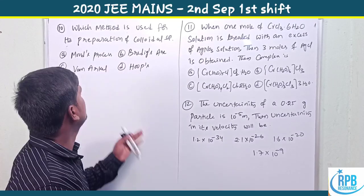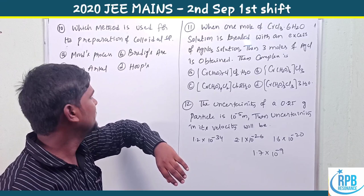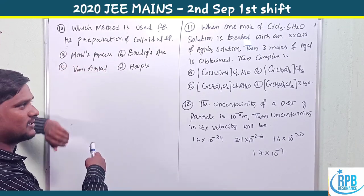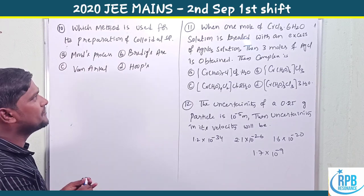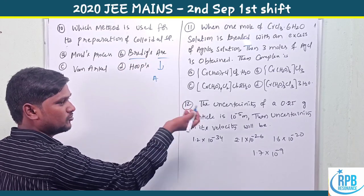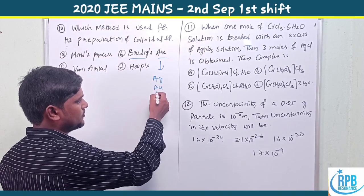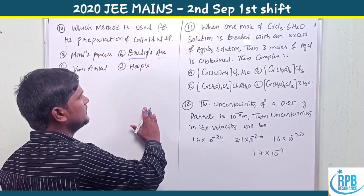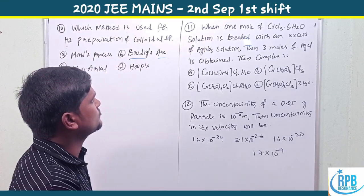Question 10: Which method is used for the preparation of colloidal solution? Mond's process is not used for colloidal solutions. Van Arkel method and Hoopes method are for refining metals. Bredig's arc method is used for preparing colloids, especially of low-reactive noble elements like silver, gold, and copper.